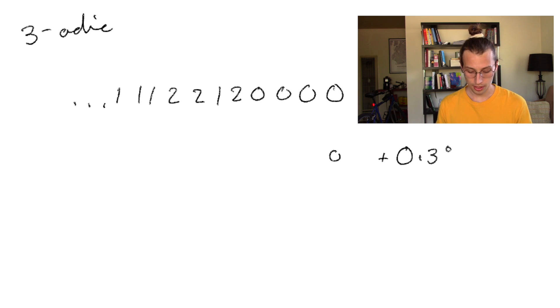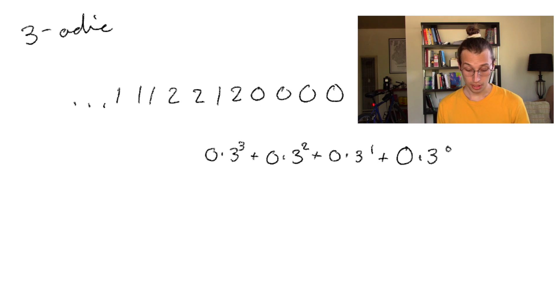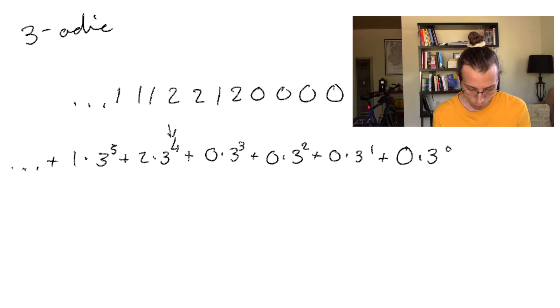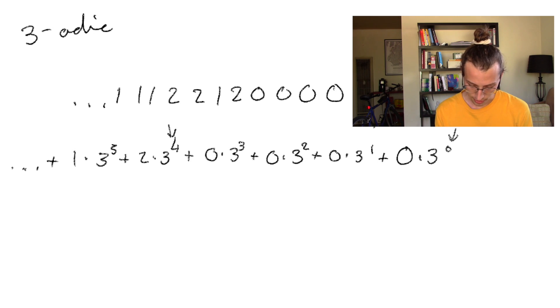Let's remind ourselves what this means in a 3-adic system. Remember, they represent powers of 3 increasing from right to left. So this means 0 times 3 to the 0, plus 0 times 3 to the 1, plus 0 times 3 to the 2, plus 0 times 3 cubed, plus 2 times 3 to the 4th, plus 1 times 3 to the 5th, and so on. There are four zeros at the beginning of this number, and we notice something interesting: the first non-zero term has 3 to the 4. It's not a coincidence that those numbers line up, because you can think about the powers here as indexing what position we're in in our string of digits.